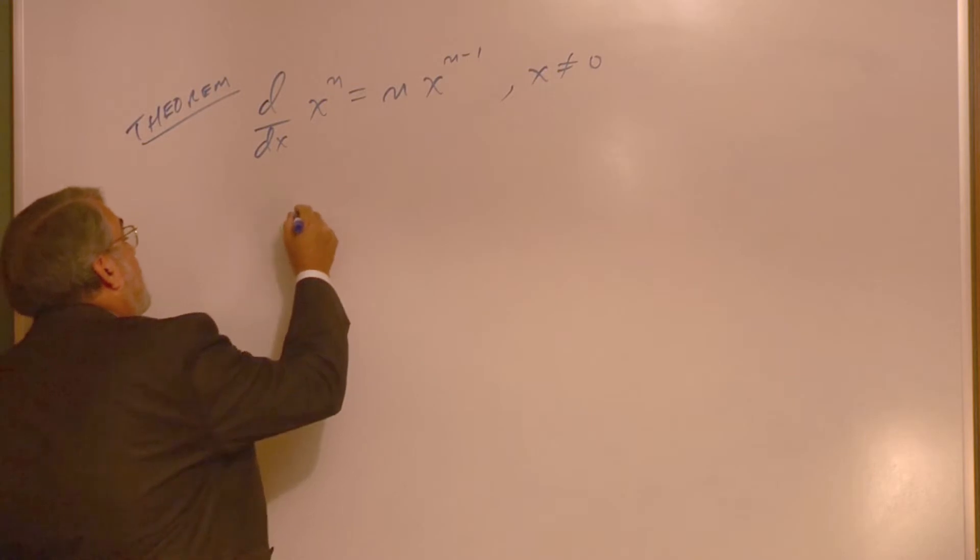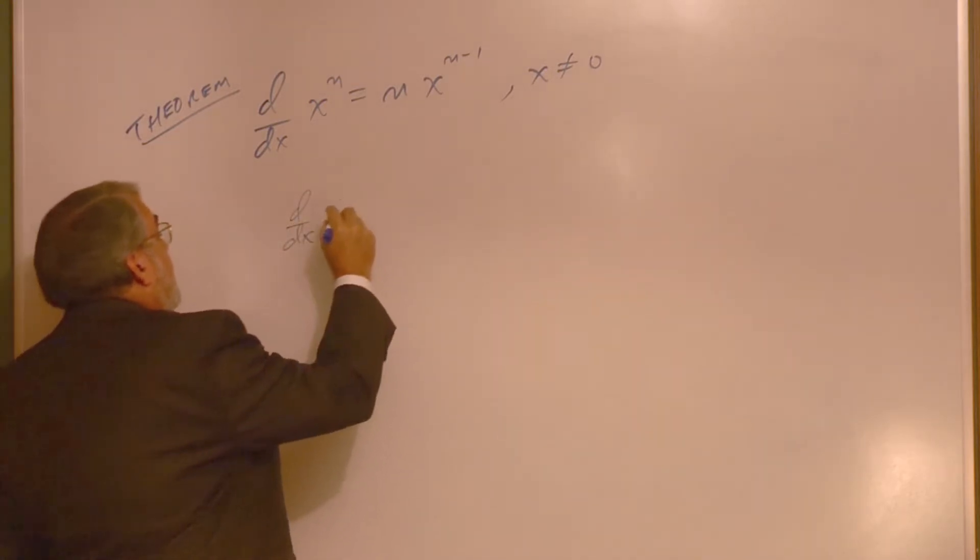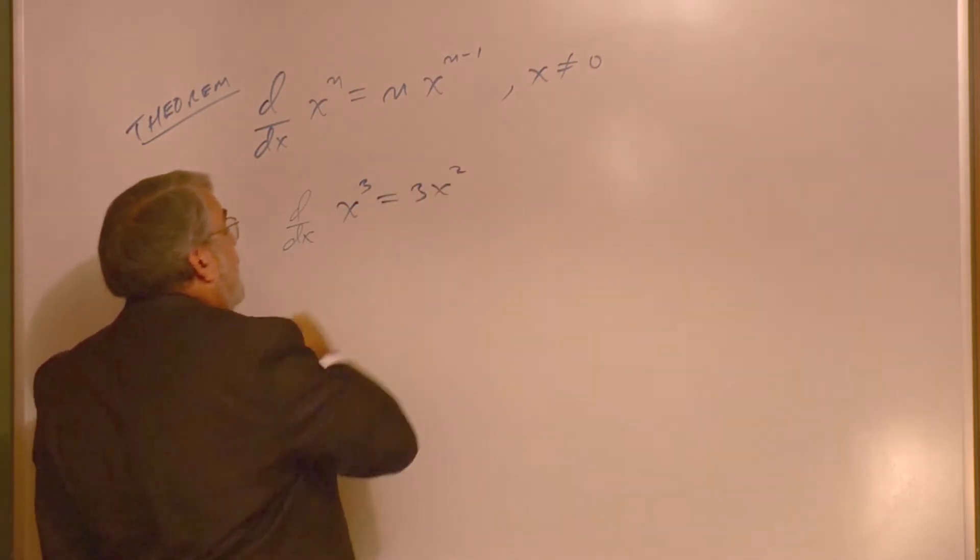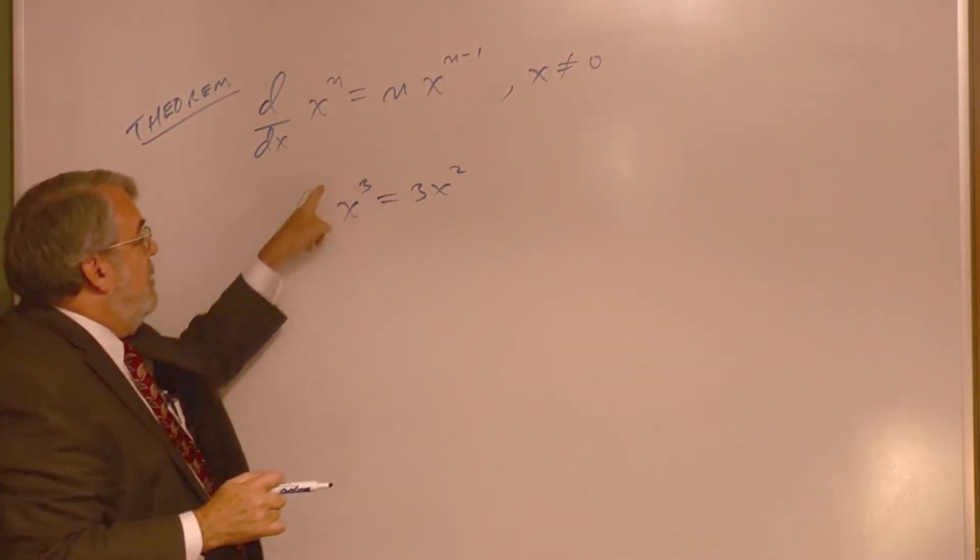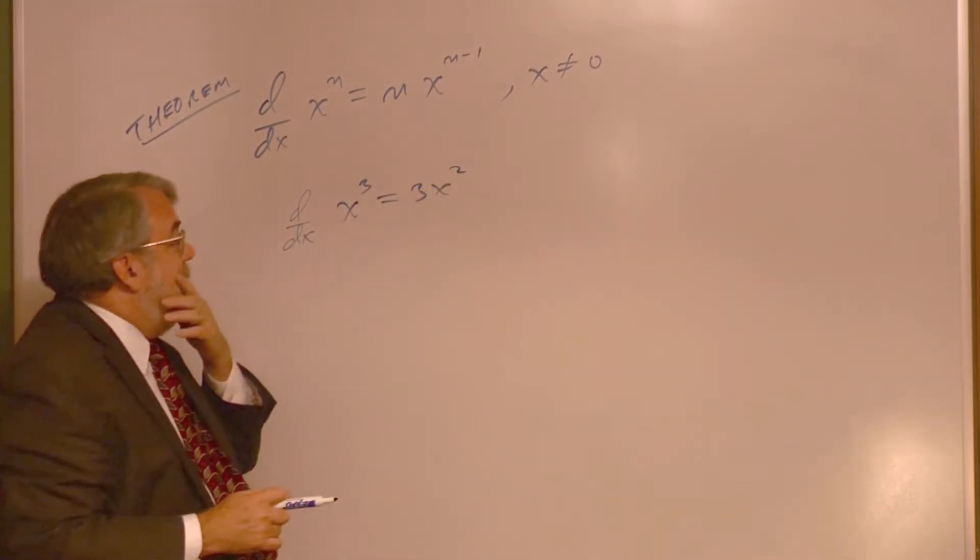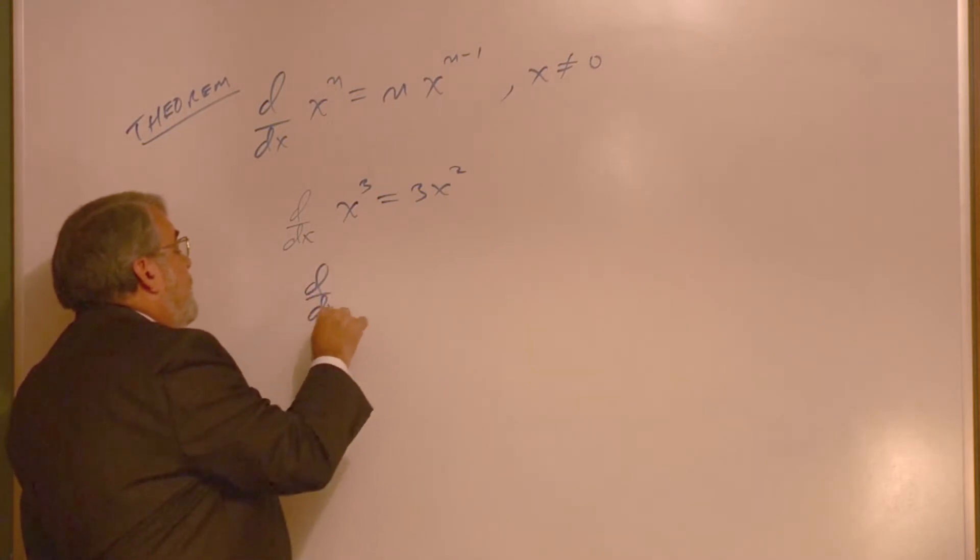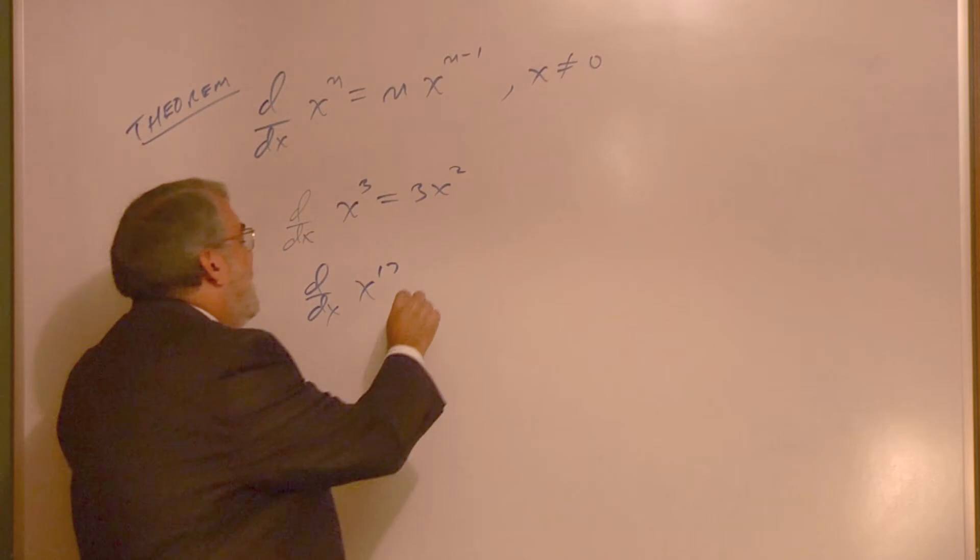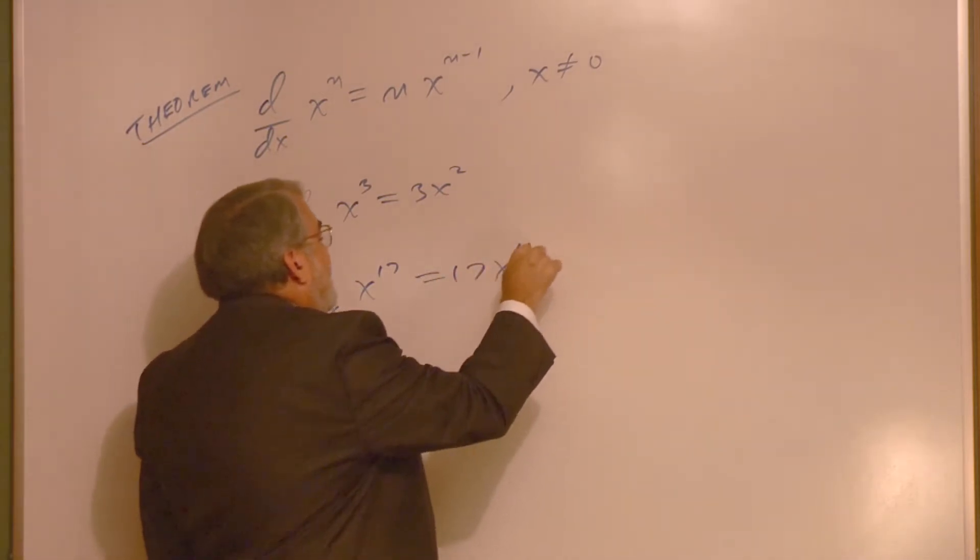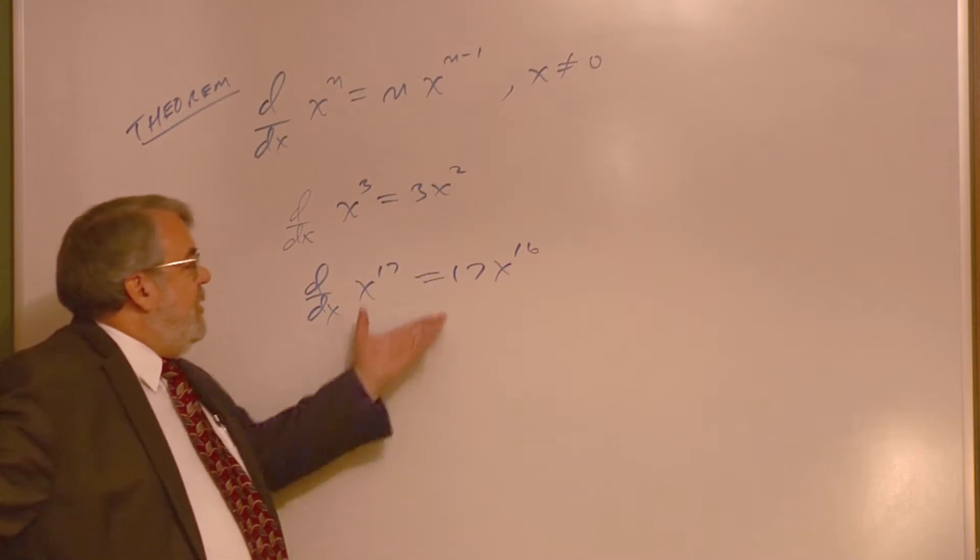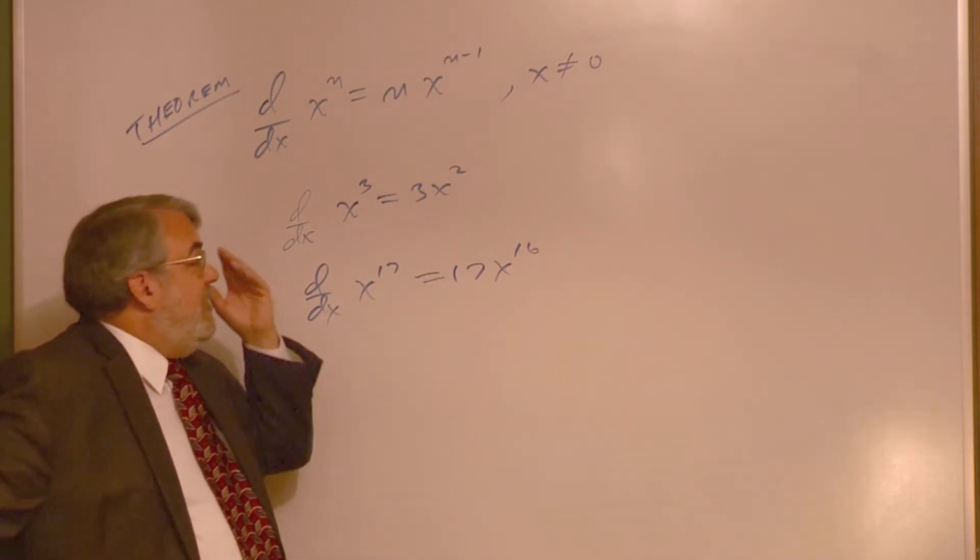For example, the derivative of x to the third is going to be 3x to the second. The exponent comes in front, subtract 1 from 3, you get 3x squared. The derivative of x to the 17th power is 17x to the 16th power. As you can see, this is a very easy one to learn. It's a very nice pattern.